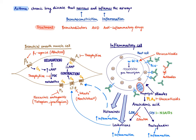Looking at this overview picture: arachidonic acid gives rise to leukotrienes and prostaglandins. You may have heard about NSAID-induced asthma. If someone is on NSAID treatment like aspirin, you block the COX pathway, and therefore arachidonic acid is shunted to the LOX pathway — producing more leukotrienes, which mediate inflammation and bronchoconstriction. This is why NSAIDs can exacerbate asthma. Glucocorticoids are also in this picture because they increase synthesis of annexins, which inhibit phospholipase A2 — so glucocorticoids particularly decrease production of arachidonic acid, resulting in less leukotrienes and prostaglandins.